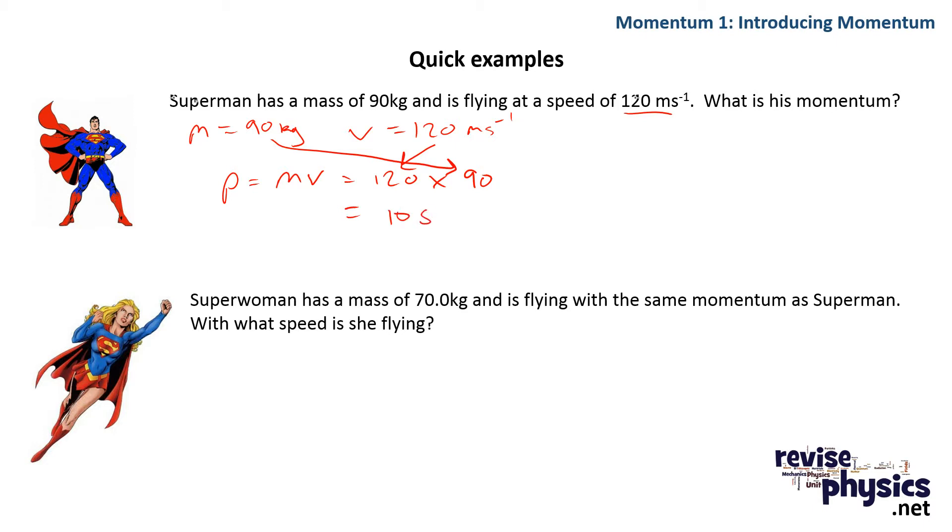Now if we look at Superwoman over here, she has a lower mass of 70 kg and we're told she's got the same momentum. So we know that p for her is 10,800, what we worked out in the last part. What speed is she flying with? Well, we know that p equals mv.